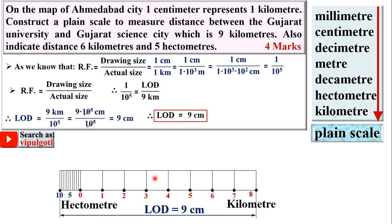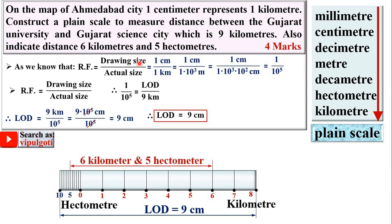This is your plane scale. It is not required to fill color in the examination — I'm showing it only to highlight the scale we constructed. For the second task, indicate the distance 6 kilometers and 5 hectometers: place one point at the 6 km mark and the other at the 5 hectometer subdivision, giving a total distance of 6.5 kilometers, or 6 kilometers and 5 hectometers.